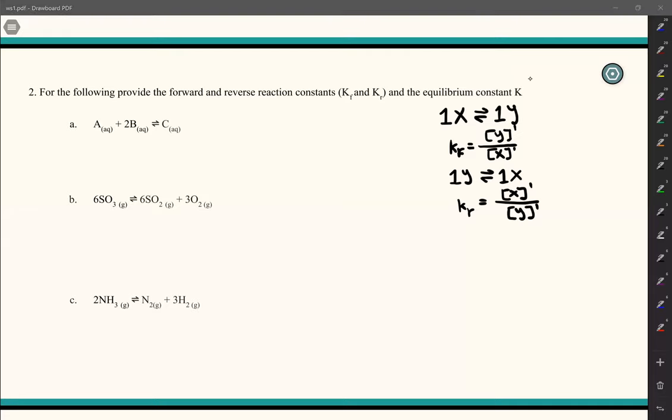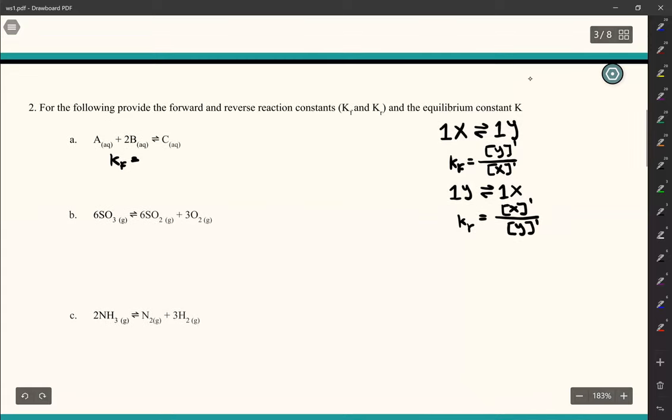So then in a similar way, K reverse is just going to be the opposite of K forward, because it's the K of the reverse reaction. So the reverse reaction would look like 1y becomes 1x, and you can imagine that the Kr would be the product x to its exponent 1 over the reactant y to its exponent 1. So learning from that, the Kf for this reaction, which is A plus 2B becomes C, we would put the product on the top, which is C. So concentration of C with its coefficient, which is 1, over the product of the reactant. So concentration of A to the coefficient of 1, and B to the coefficient of 2.